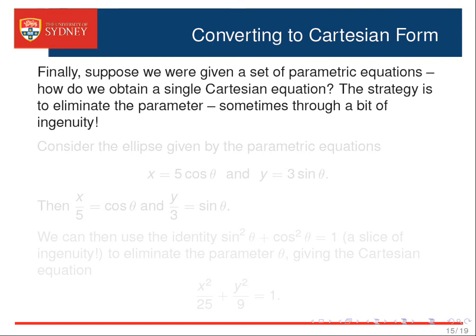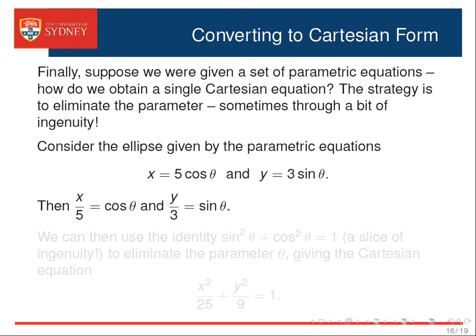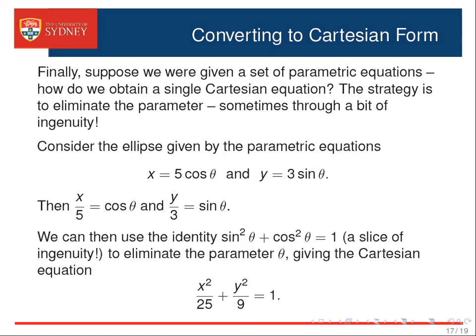Now that we've investigated the process of parameterizing a Cartesian equation, let us briefly study the opposite problem of converting a pair of parametric equations into Cartesian form. The basic strategy is to rearrange the parametric equations in a way that allows us to eliminate the parameter into Cartesian form, although this can sometimes be quite difficult and an element of ingenuity is required. Consider the ellipse given by the parametric equations x equals 5 cosine theta and y equals 3 sine theta. Then x on 5 is equal to cosine theta and y on 3 is equal to sine theta. We can then employ a clever trick to eliminate the parameter: squaring both equations and then adding them together, we can use the well-known trigonometric identity sine squared plus cosine squared equals 1 to eliminate theta.